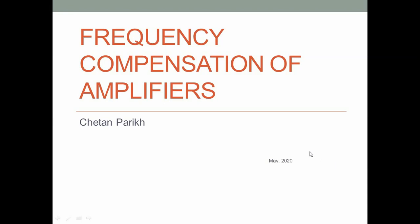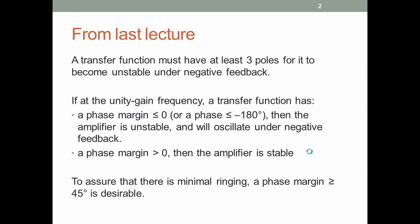This lecture will talk about frequency compensation of amplifiers. In the last lecture, we had discussed stability. What we had discovered was that the transfer function must have at least three poles for it to potentially be unstable under negative feedback. If at the unity gain frequency the transfer function has a phase margin less than or equal to zero, or a phase less than or equal to minus 180 degrees, then the amplifier will be unstable and it will oscillate under negative feedback.